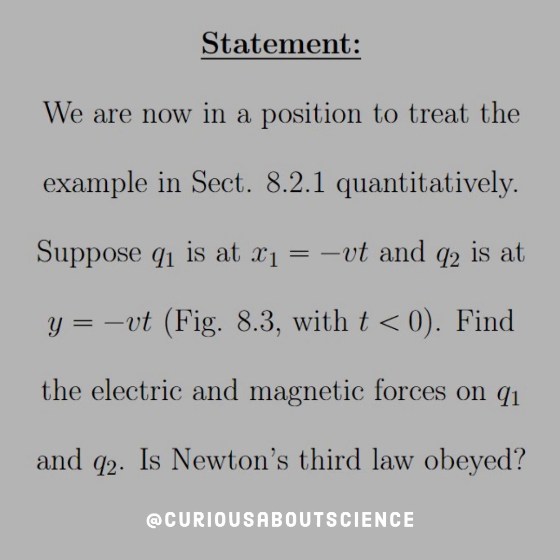Suppose Q1 is at x1 equals negative Vt and Q2 is at y equals negative Vt, figure 8.3 with t less than 0. Find the electric and magnetic forces on Q1 and Q2. Is Newton's third law obeyed? That's an interesting question.